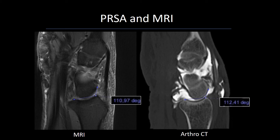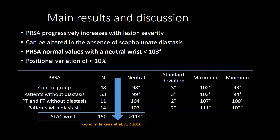Our data indicates that the PRSA progressively increases with the severity of tears of the scapholunate ligament. We also showed that in some patients this angle could be altered in the absence of scapholunate diastasis — before diastasis was detectable on conventional radiographs or CT.